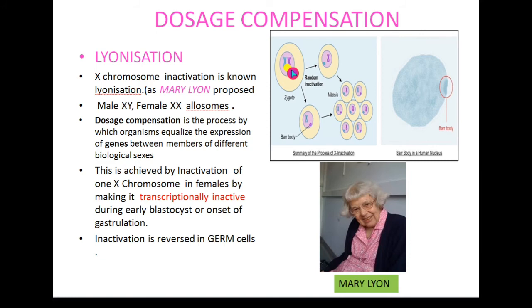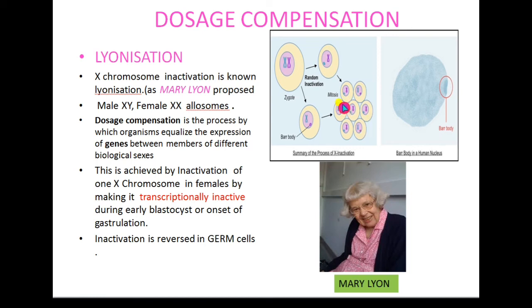Which X chromosome gets inactivated? Females get one X chromosome from the mother and one from the father. The maternal X chromosome is inactivated in some cells and the paternal X chromosome is inactivated in other cells. The descendants of these cells carry the inactive X chromosome throughout their life. However, this inactivation is reversed in germ cells, so it does not pass on to the gametes. That is why gamete cells contain two functional X chromosomes.